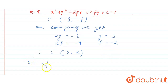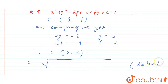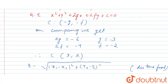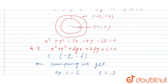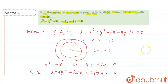We need to find the radius. We will find it using the distance formula: √((x₂ - x₁)² + (y₂ - y₁)²). We have the center (3, 2) and the point (-2, 14) lying on the circle.